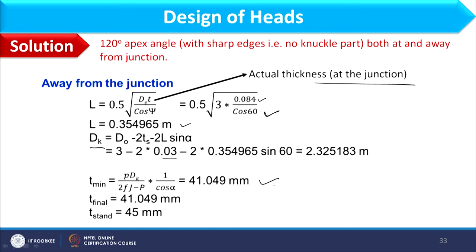Since 41.049 mm is greater than 30 mm, no corrosion allowance is added. The final thickness of the conical section away from the junction is taken as 45 mm.